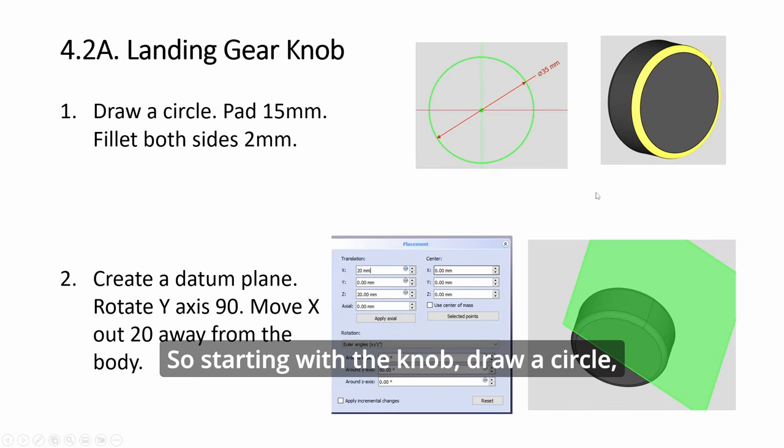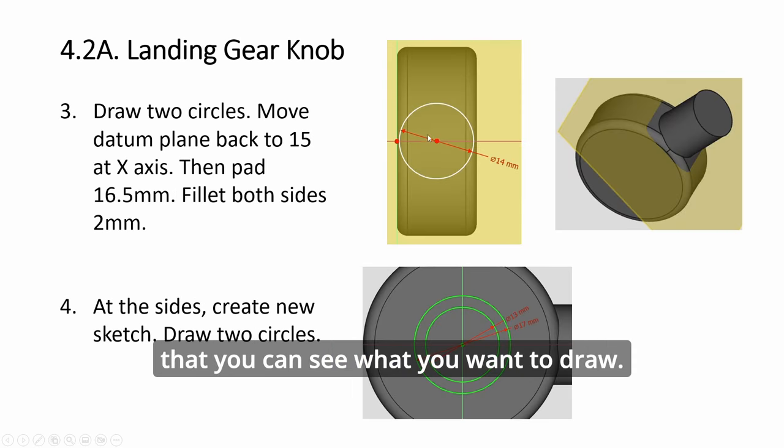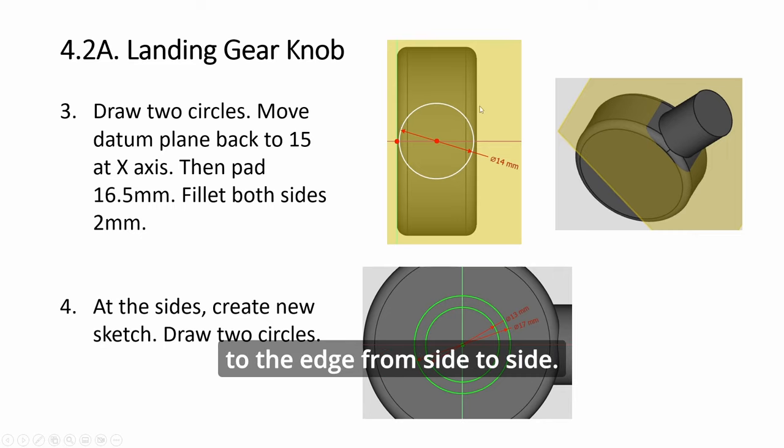Starting with the knob, draw a circle, pad and fillet the sides. For the datum plane, click on the top and rotate it 90 degrees. Move it out so you can see what you want to draw, then draw a circle almost to the edge from side to side.